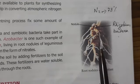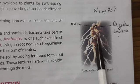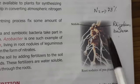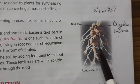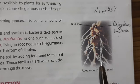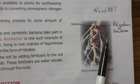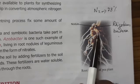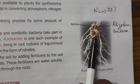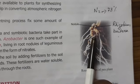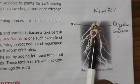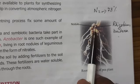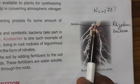By this, the plant can make plant proteins. In turn, the leguminous plant gives shelter to the rhizobium bacteria, which lives inside the root nodules. So both are getting benefit from each other.